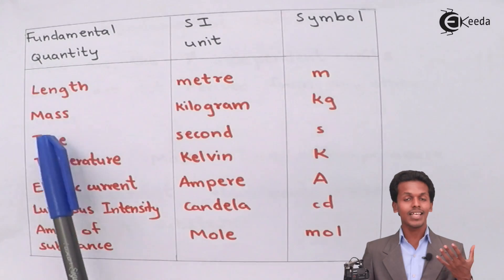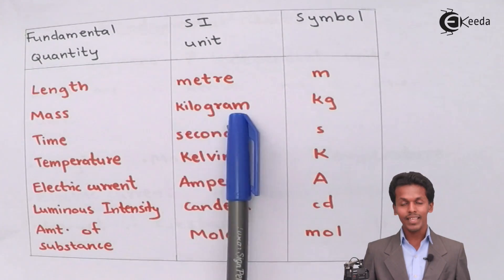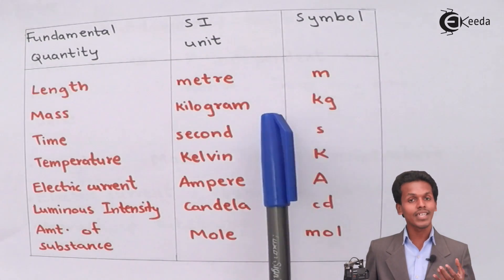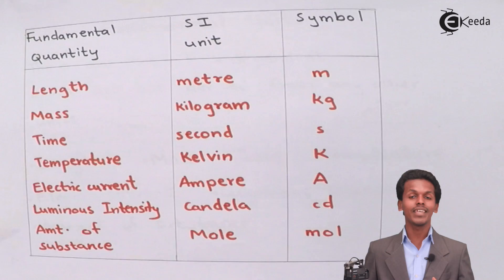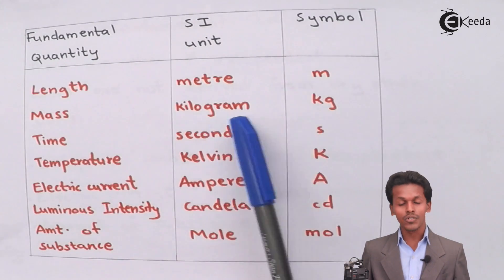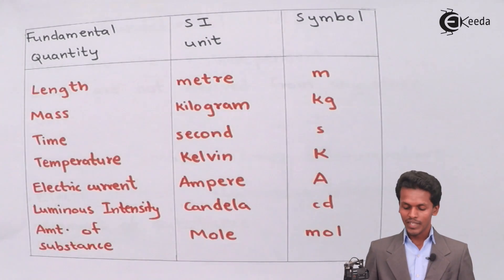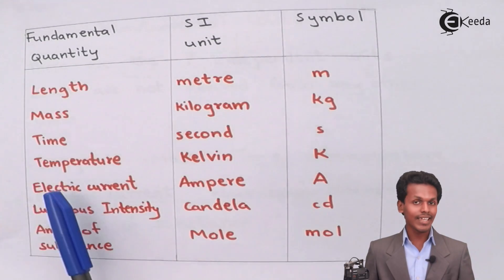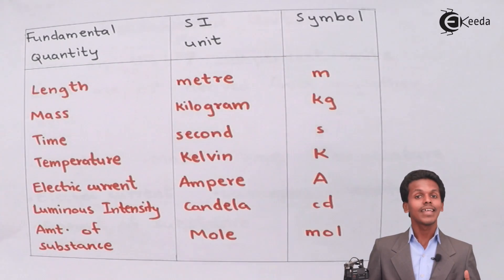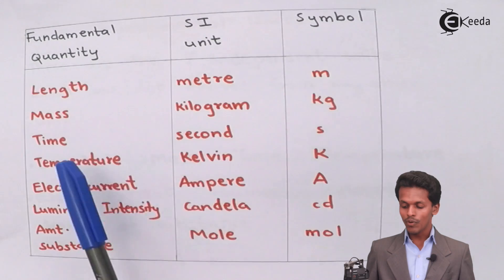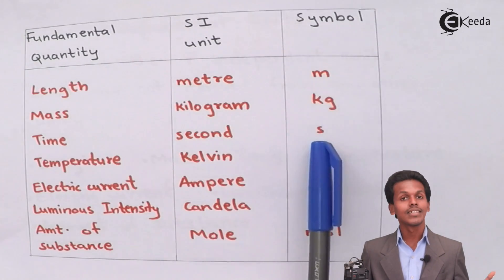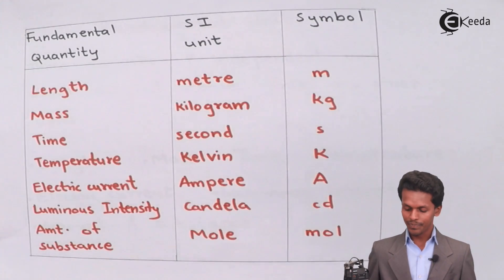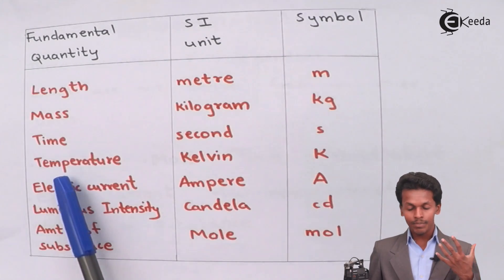Talking about the mass, the mass has a SI unit of kilogram and the symbol is kg. In this case, the K alphabet should be in a smaller form and the gram also should be in a smaller form. Now talking about the time, the time can be measured in minutes or hours, but the SI unit is in second. We are using the symbol as s, small s.